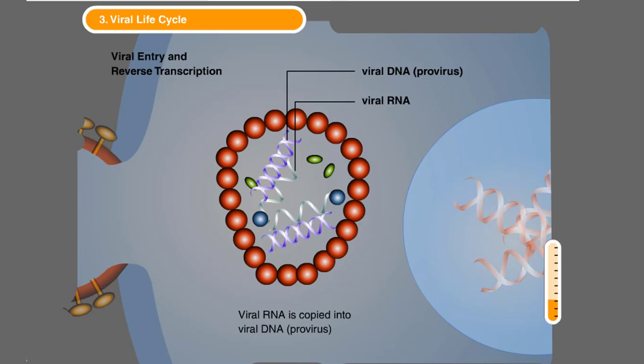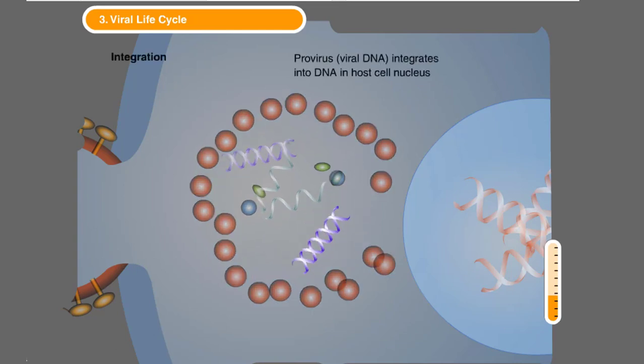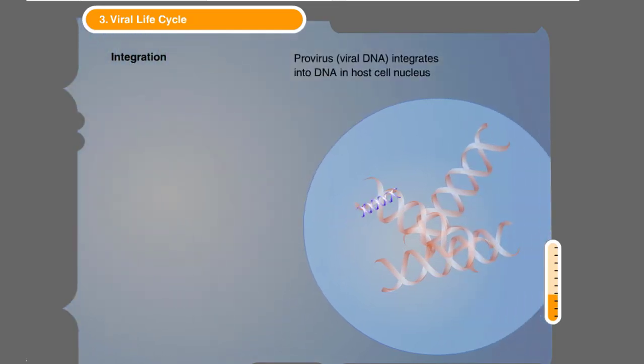This DNA copy of the viral RNA is called a provirus. With the aid of another enzyme called integrase, the HIV provirus is integrated, or spliced, into the host cell's own DNA.